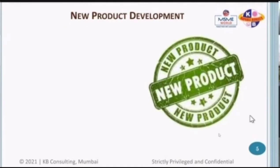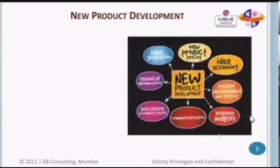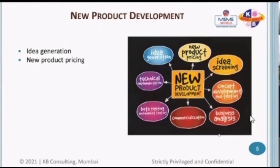Now let's delve into the new product development process. How do you create new products? First is idea generation — you have an idea for a particular product. Then you consider new product pricing. If the pricing involved is too high, you can kill the project right there, because even though the product is great, you won't be able to sell it to the market. Then you do idea screening — with a few ideas evaluated against pricing, you decide which idea is going to work for you.